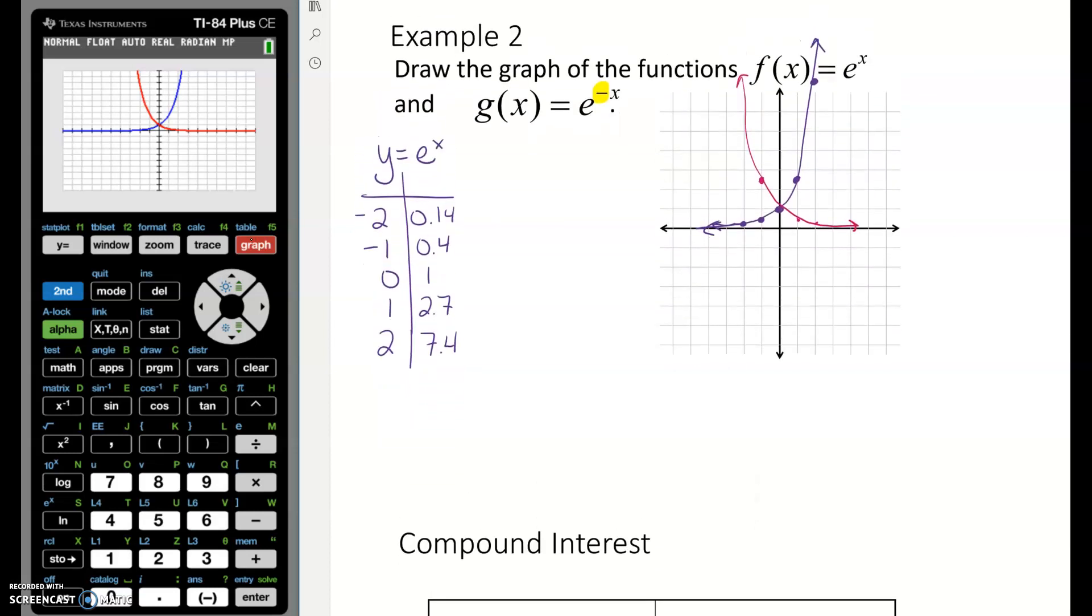And transformations would work exactly the same. So if we did e to the (x+2) with the plus 2 up in the exponent, that would move the graph left 2. If we did e to the x and then not in the exponent did plus 3, that would move the whole graph up 3 and then its asymptote would be at 3. So the transformations that we talked about in the previous video all still apply when you're talking about graphing functions with e.